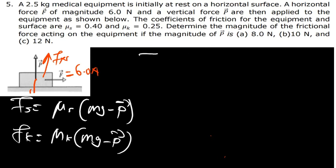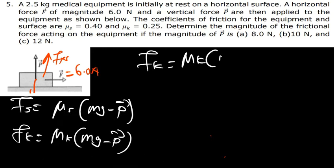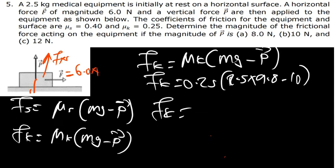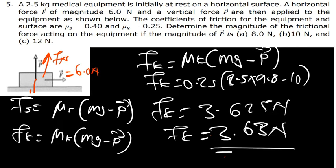Fk equals 0.25 times (2.5 times 9.8 minus 10) equals 0.25 times 14.5 equals 3.625 newtons, approximately 3.63 newtons. That is the friction force for Part B.